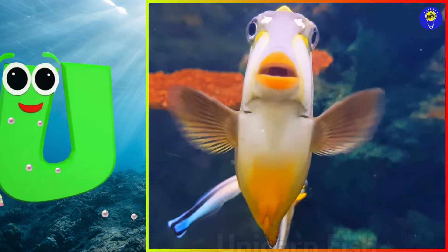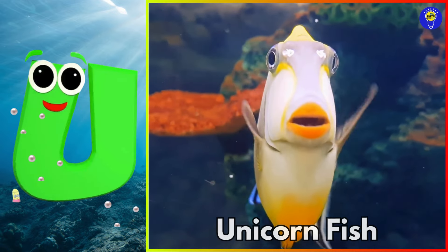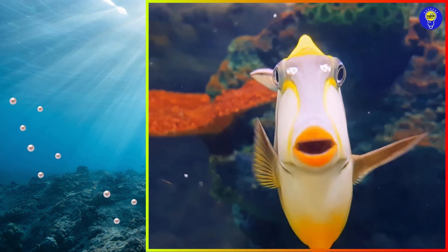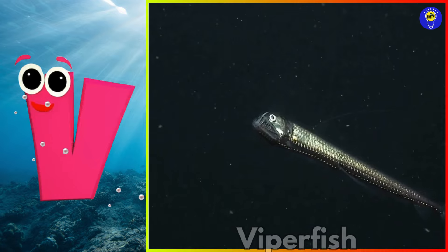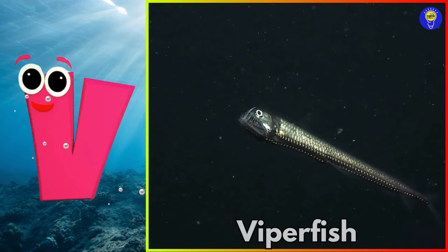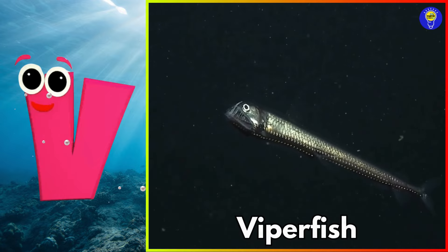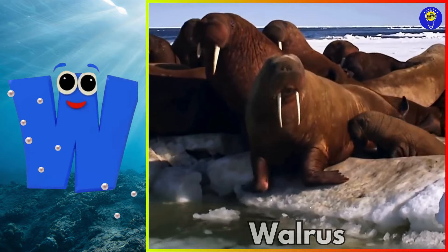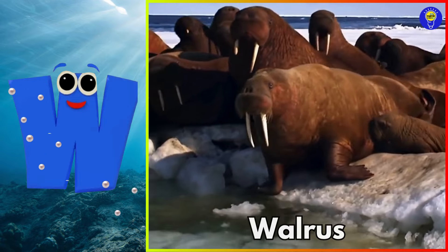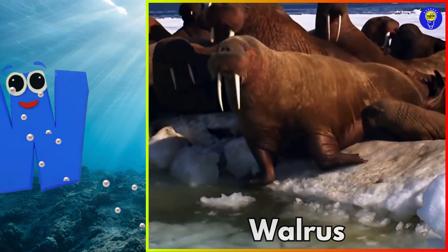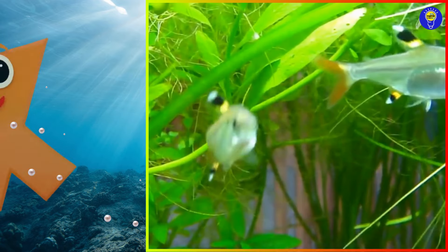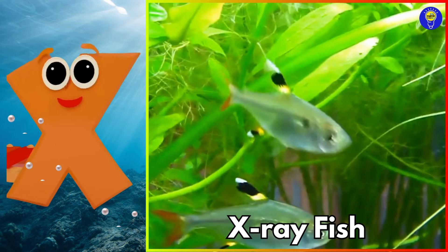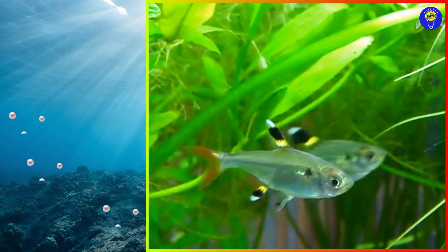U is for unicorn fish. Uh, unicorn fish. V is for viperfish. V, viperfish. W is for walrus. W, walrus. X is for x-ray fish. Z, x-ray fish.